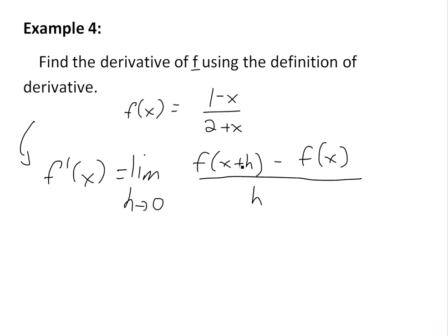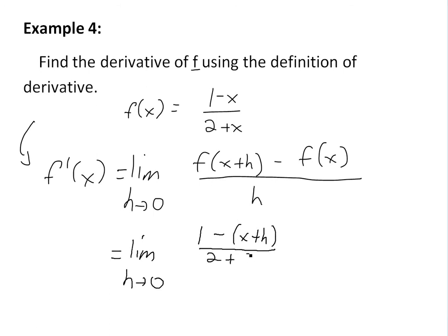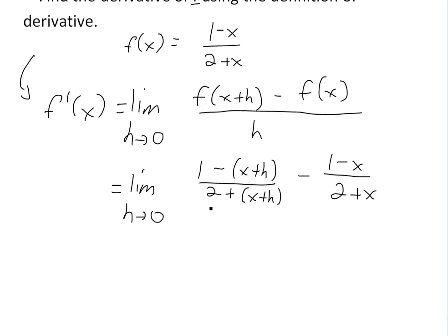For every x, we just plug in x plus h in this part, and this one we just put in as it is. So this would be equal to the limit as h approaches 0 of: 1 minus (x plus h), all divided by 2 plus x plus h, then minus 1 minus x all divided by 2 plus x — that's f(x+h) minus f(x), all divided by h.